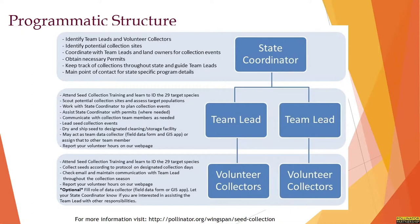Team leads are the local, on-the-ground volunteer leads throughout each state. State coordinators will set them up with a team of seed collection volunteers and help them find a collection site if they don't already have one. From there, they will work with their state coordinator to obtain any necessary permits, make sure they become really familiar with our 29 target species, and then they can scout sites, identify populations, coordinate with their teams to schedule and lead collection events, and also oversee the drying and shipping of the seed to Mason State Nursery. Many teams have opted to have co-leads and divide up the tasks, which has been very effective.